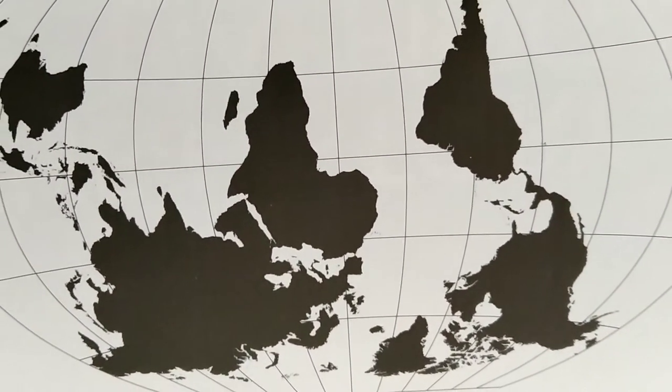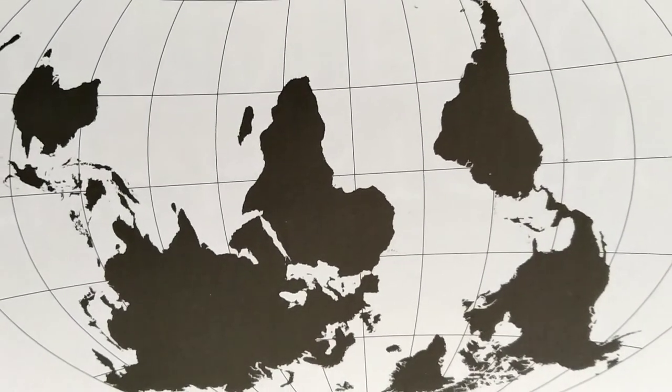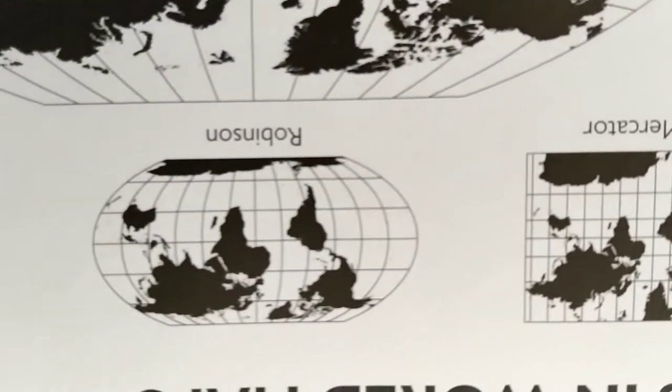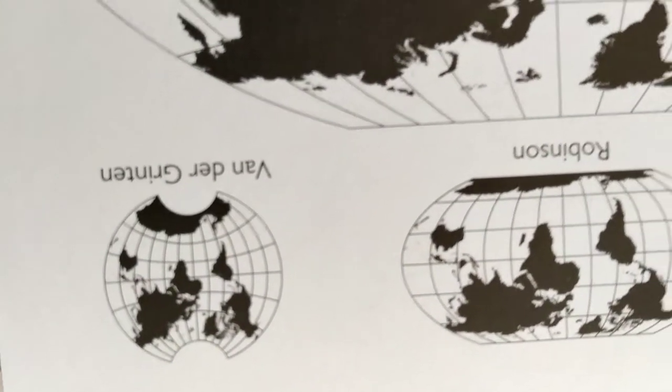Whatever we see in Google Maps also has different types of views that we can see: the Mercator view, the Robinson view, and the Winkel Tripel view.